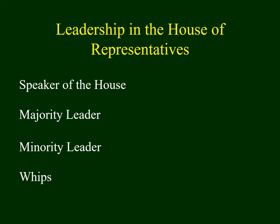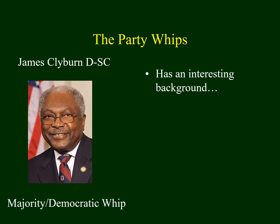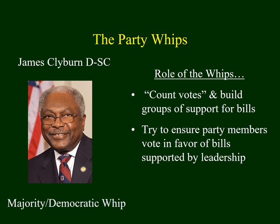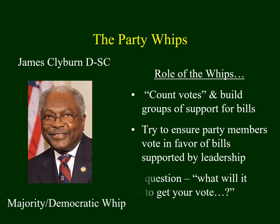The next position would be the whips. The current majority whip is James Clyburn. He has an interesting background — he met his wife in jail. Both grew up in the segregated South, both were protesting non-violently against segregation, both were thrown in jail, and that's where they met. There are two primary things whips do: they count votes to determine if a proposal will pass, and if it's on the edge, they try to build support and get members of their party to vote in favor of legislation that leadership supports.